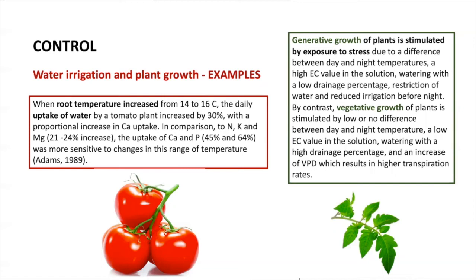It's very well known that irrigation can have an effect in promoting generative or vegetative growth. Generative growth is stimulated by a difference between day and night temperature, high electrical conductivity, watering with low drainage percentage, and reducing irrigation before night. On the other hand, vegetative growth is stimulated by low or no difference between day and night temperature, low electrical conductivity, high drainage percentage, and an increase in VPD.